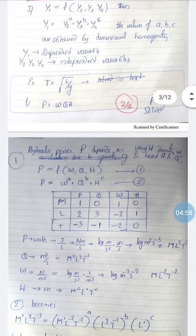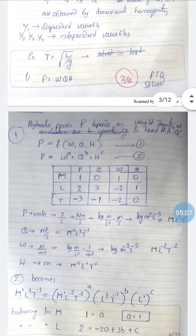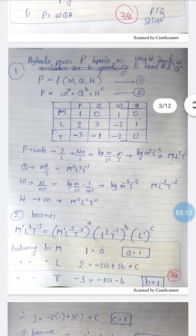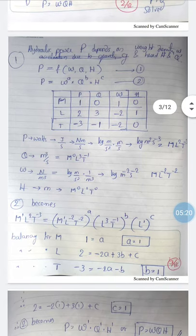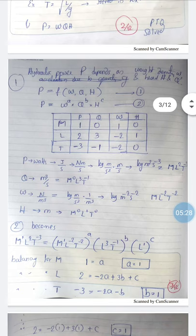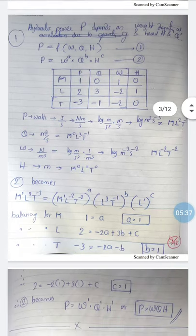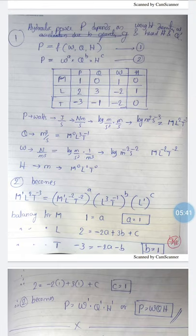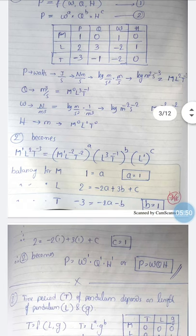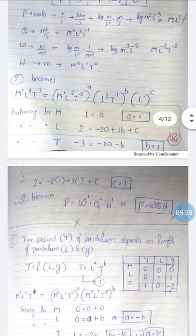Two problems are solved using Rayleigh's method: the time period T of a pendulum as a function of length and acceleration due to gravity g, and hydraulic power P as a function of weight density w, discharge Q, and head H. For power, the unit watt equals kg·m²/s³, giving dimensions ML²T⁻³. Similarly, the dimensions of Q and weight density are determined. The equation P = wᵃ · Qᵇ · Hᶜ is written and the dimensions are balanced on both sides.